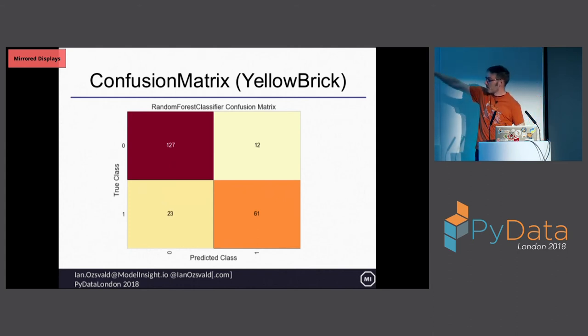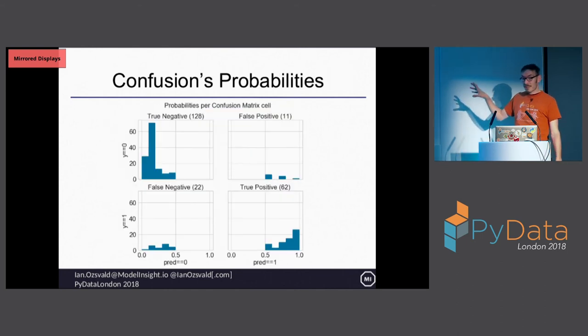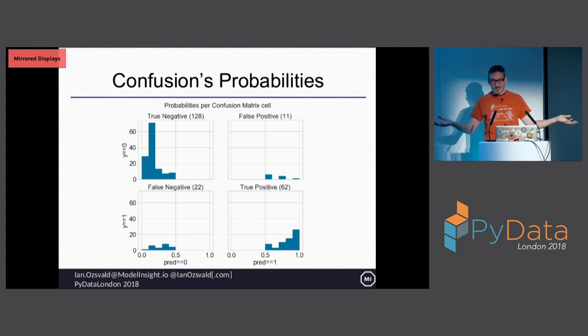We see here, true class, top left corner, 127. True class is zero. Did people live or die? Well, they died. How many correct predictions for died? 127. Most people died and we got it right. Bottom right corner, who survived? Of the trues who did survive, we predicted 61 of them. But of the people who died and we predicted they survived, that's 12. And of people who did survive and we predicted they died, 23. This gives us some clue as to what's going on in our data.